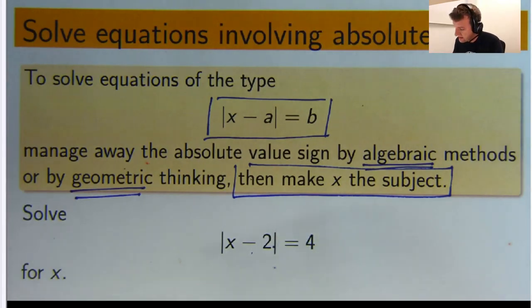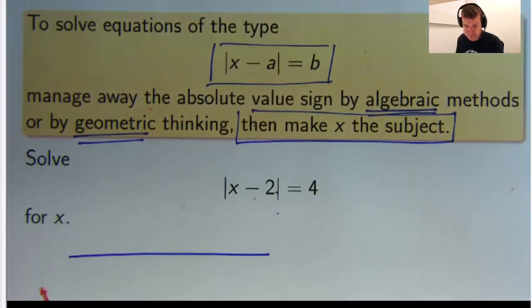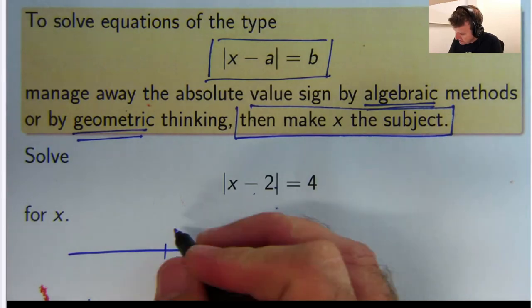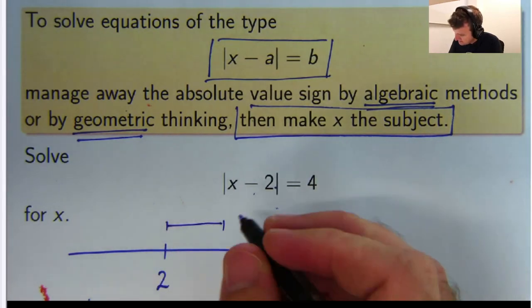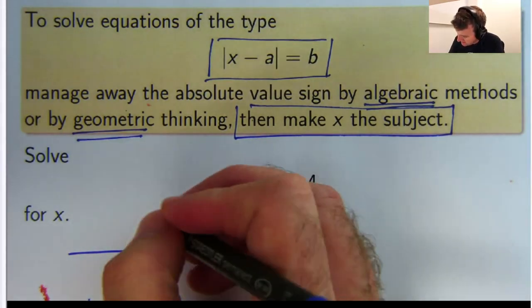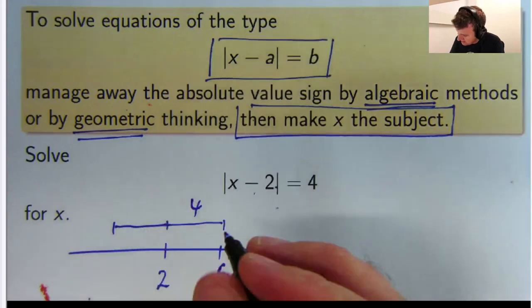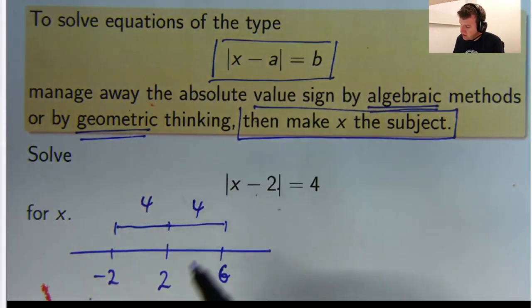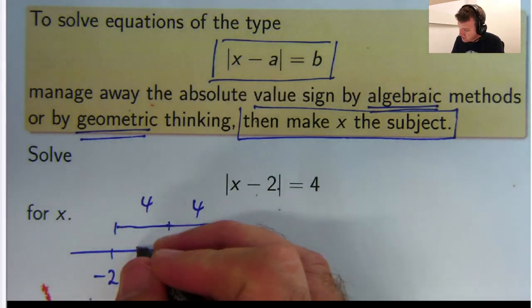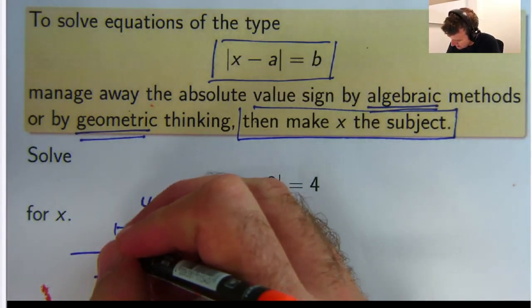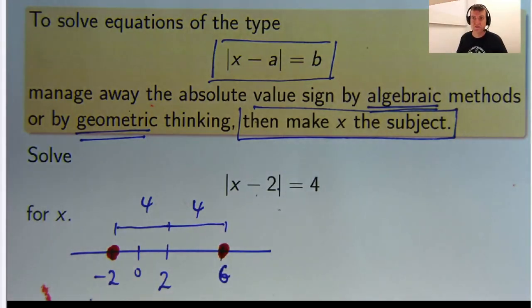So if I just draw in a little number line here, so I'll put in 2 on the number line, and I go 4 units that way, I'll get to 6, right? And if I go 4 units that way, I'll get to negative 2. So what numbers are exactly 4 units away from 2? Well, 6 and negative 2. So there's one solution, there's the other solution. So there are two solutions.